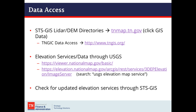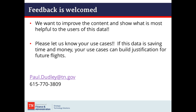For data access, you can go to tnmap.tn.gov and click the GIS data page to download DEMs, LiDAR data, contours, break lines, etc. You can also access the same data at the TNGIC data access site at tngis.org. Through USGS, they have the National Map where you can download single tiles, as well as a web map service using digital elevation models — search USGS elevation map service to find it. Check for updated elevation services through STS GIS. Feedback is always welcome; we want to improve this content and please let us know your use cases, as they can build justification for future flights.